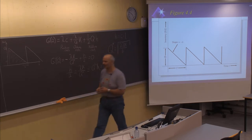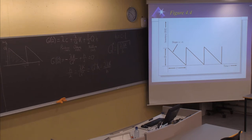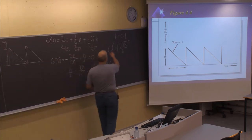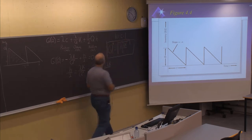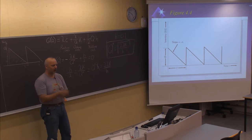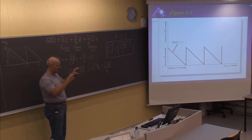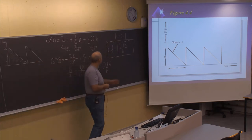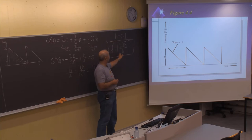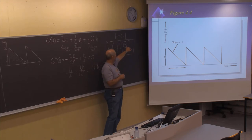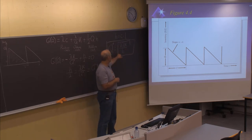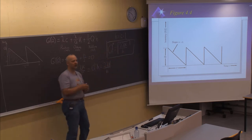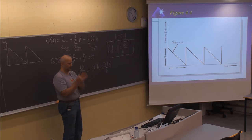We find that Q*, the optimal Q, is equal to the square root of 2 lambda K divided by H. This is denoted as the EOQ formula — the economic order quantity. To find the optimal order size, you take the square root of 2 multiplied by the annual demand, multiplied by the one-time ordering cost K, divided by H, the holding cost per unit per unit time.